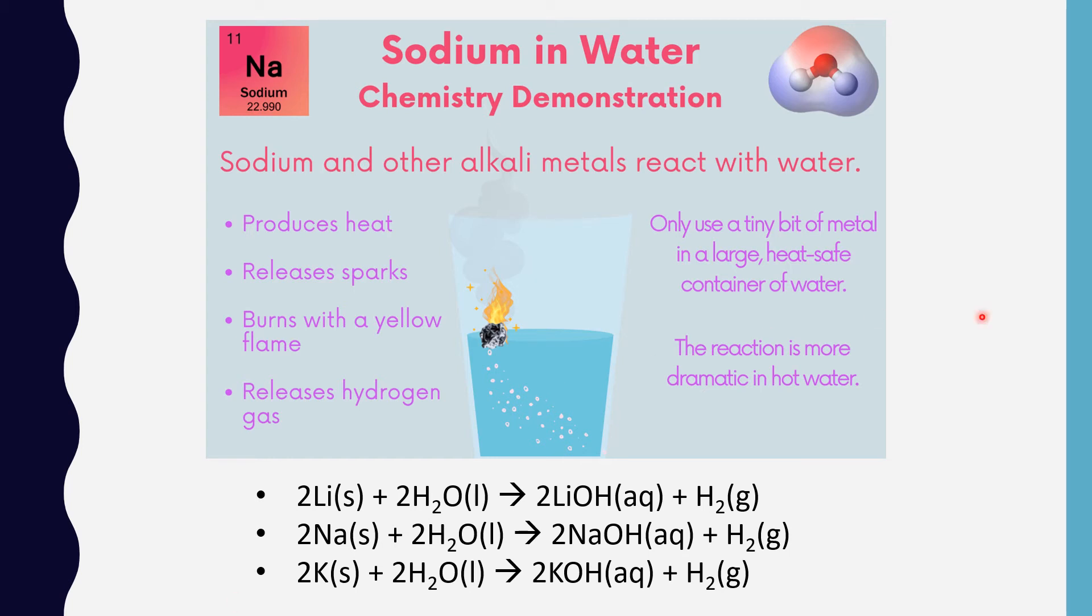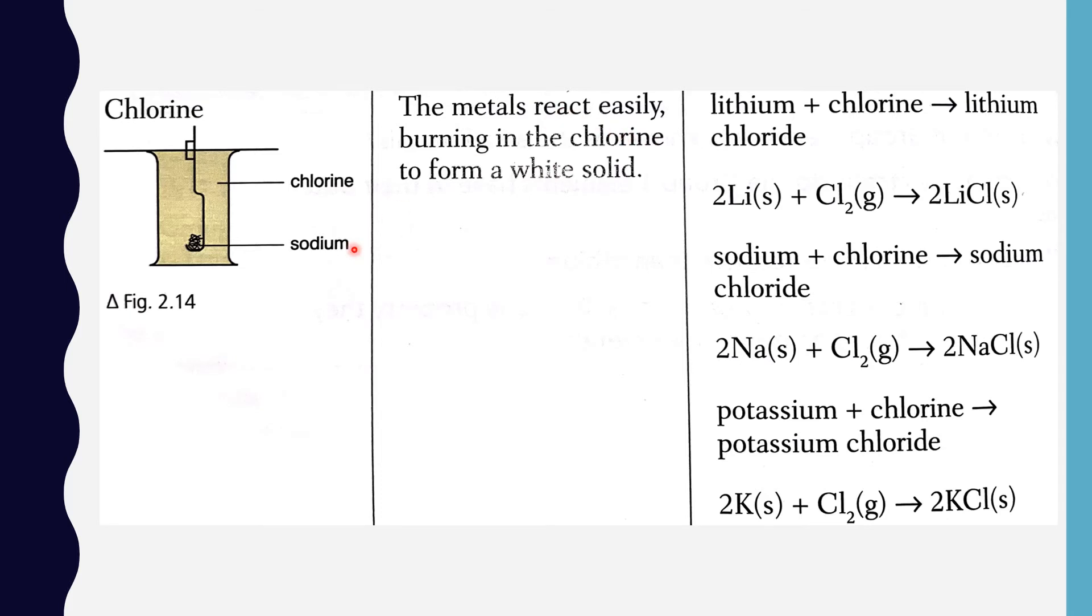Here we can see an example of how the metals react easily, burning in chlorine to form a white solid, which we all know is salt. With sodium it is sodium chloride. Because they're all very reactive metals and chlorine is a reactive non-metal, they just attract each other. The chlorine wants to gain electrons to get to the same electron configuration as the noble gases, and the metals are ready to give their electrons. Lithium plus chlorine gives lithium chloride, sodium plus chlorine gives sodium chloride, and potassium plus chlorine gives potassium chloride.